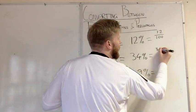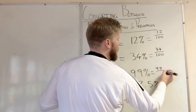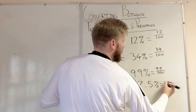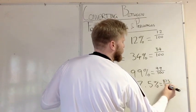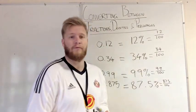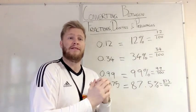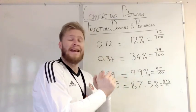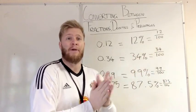So as you can see there, we've got 34 over 100, we've got 99 over 100, and we've got 87.5 over 100. Now, these are quite simple, and we can simplify those fractions down, but we're not going to show you how to do this in this video. But it would be easy, once you've got that, to simplify that down.